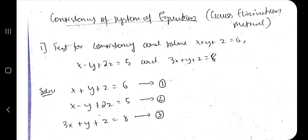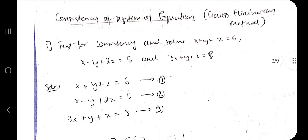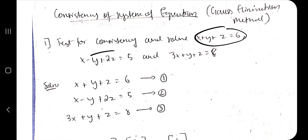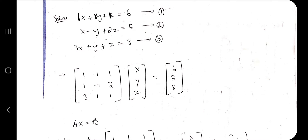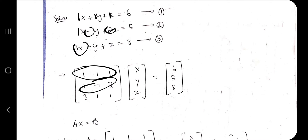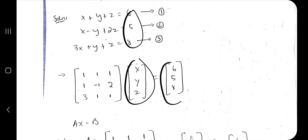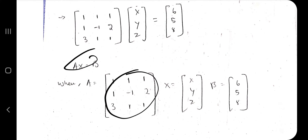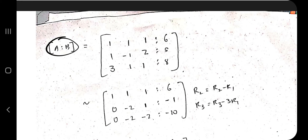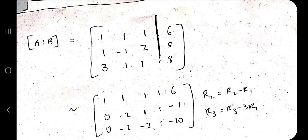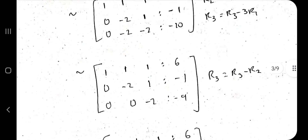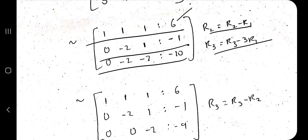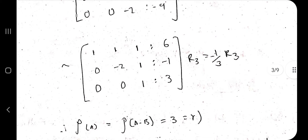Now we solve using the Gauss Elimination method. Three equations are given. Write them in standard form and extract the coefficient matrix: for example, coefficients 1, 1, 1 / 1, −1, 2 / 3, 1, 1, with variables x, y, z and right-hand side values 6, 5, 8. This gives the system Ax = b. Then write the augmented matrix [A : b] — remove x, y, z and include the constants directly — and apply row operations to achieve echelon form with two zeros in column 1 and one zero in column 2.